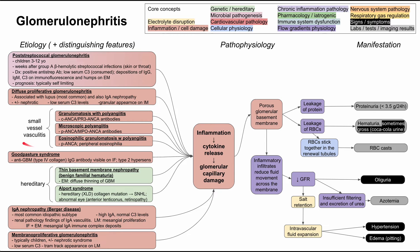Three etiologies are associated with small vessel vasculitides. Granulomatosis with polyangiitis is C-ANCA mediated. Microscopic polyangiitis is P-ANCA mediated. Eosinophilic granulomatosis with polyangiitis is also P-ANCA but is distinguished by eosinophilia on labs. Goodpasture syndrome involves antibodies against the glomerular basement membrane — specifically type 4 collagen — visible on immunofluorescence, and is a type 2 hypersensitivity reaction.